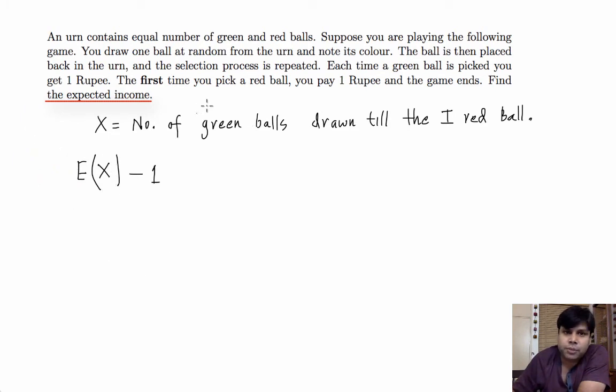What is expected value of X? Well, because this is number of green balls drawn till the first red ball, we know that this is geometric random variable where probability of drawing a red ball in each trial is half.